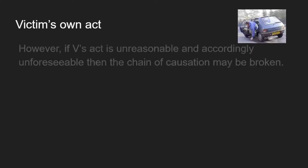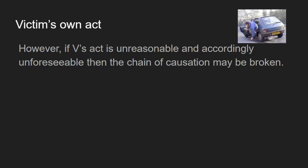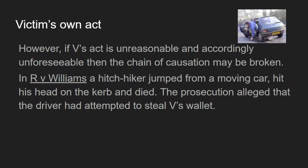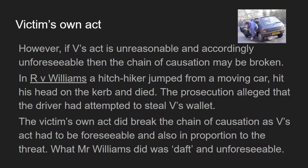By contrast, if the victim's actions are unreasonable and unforeseeable, then the chain of causation may be broken and the defendant may be held not guilty. In Williams, a hitchhiker jumped out of a moving car, hit his head on the curb and died. It was alleged the driver may have attempted to steal the victim's wallet, which is why he jumped. The court said the victim's act did break the chain because the actions had to be foreseeable and in proportion to the threat. Whilst in Roberts what the victim did was in proportion to the threat of sexual assault, what Mr Williams did here was daft and unforeseeable, so the chain was broken and the defendant was not found guilty in relation to his death.